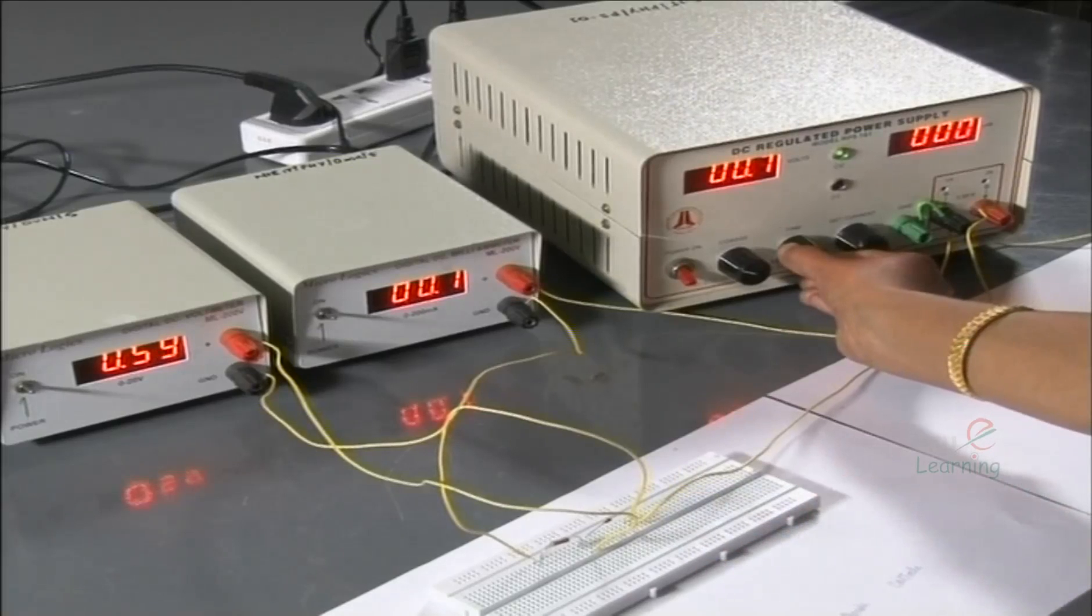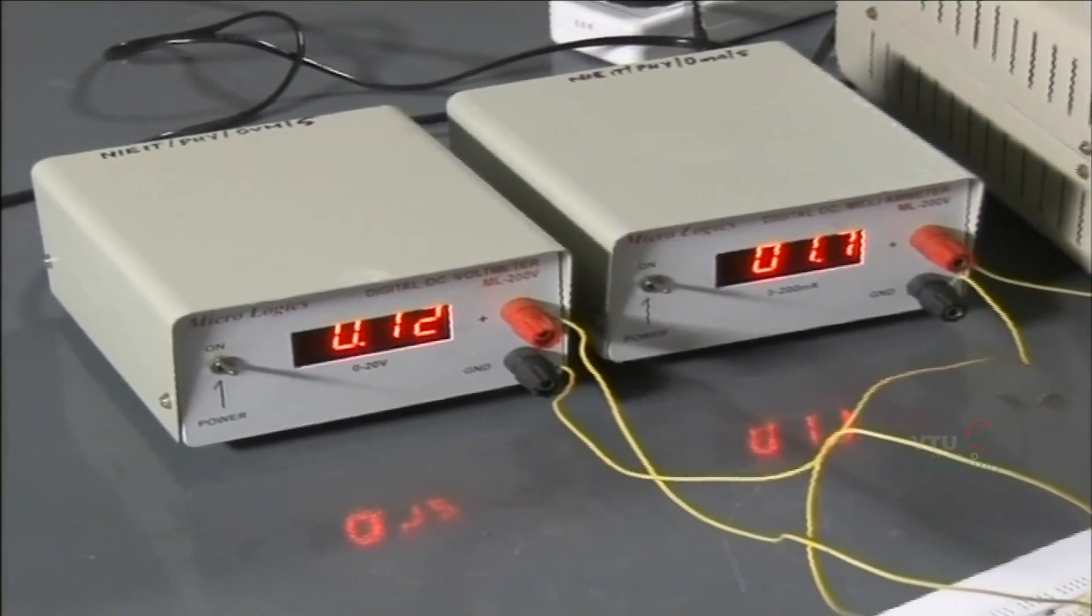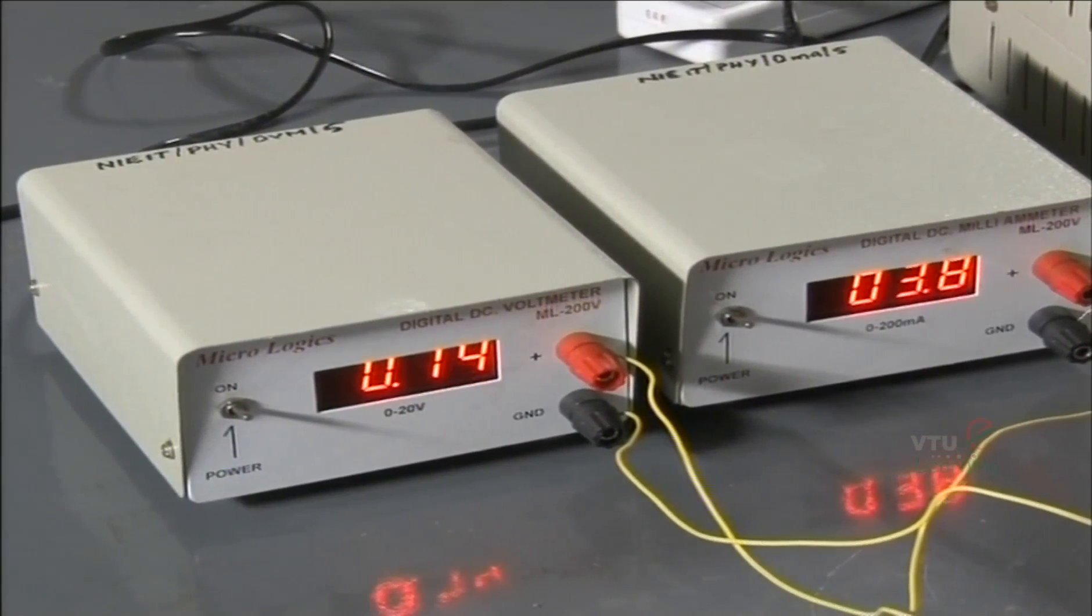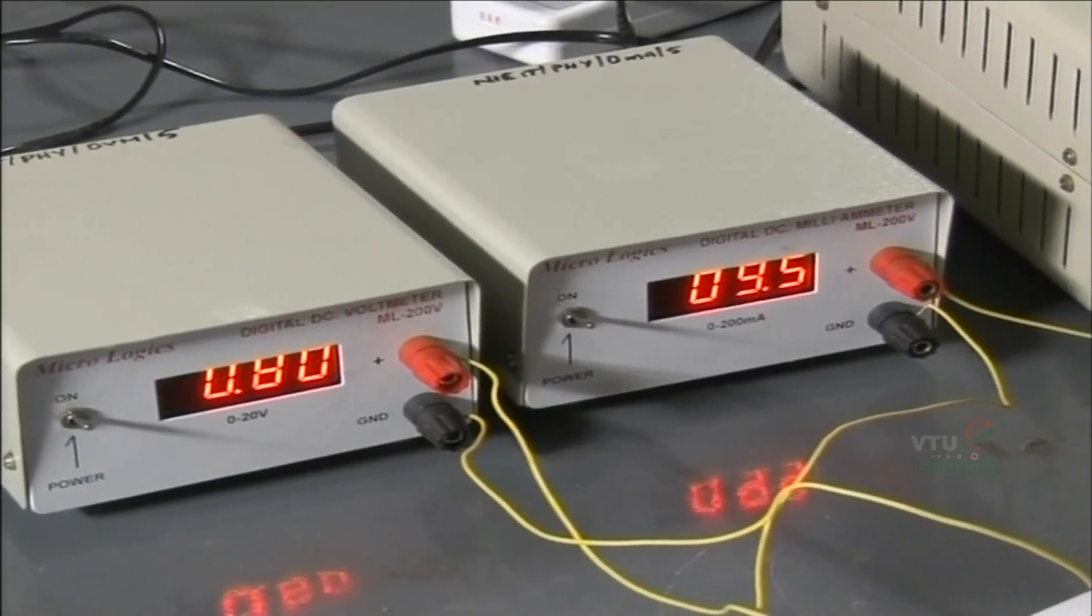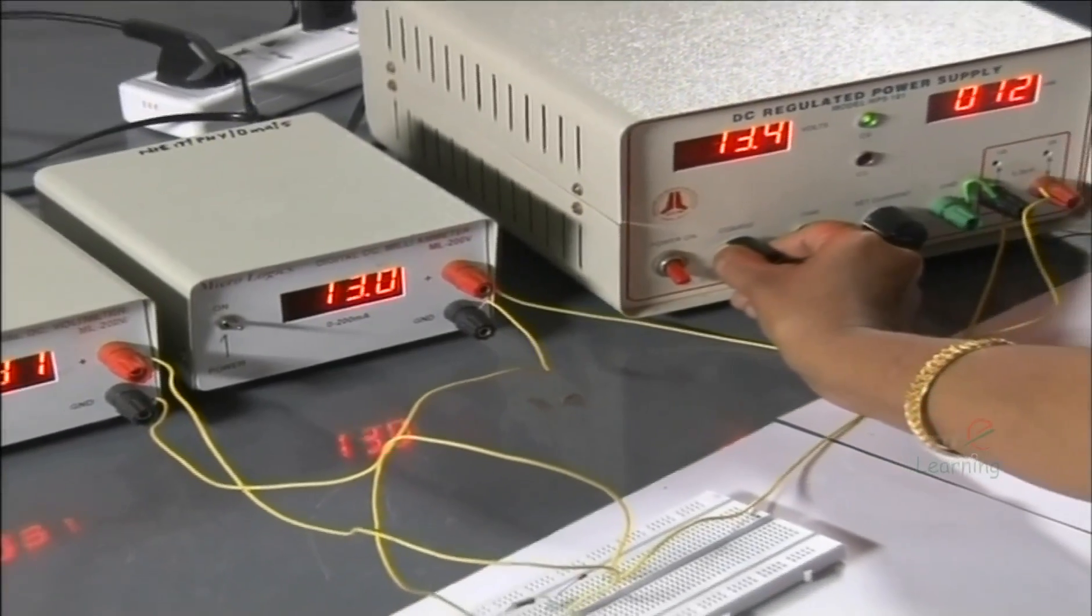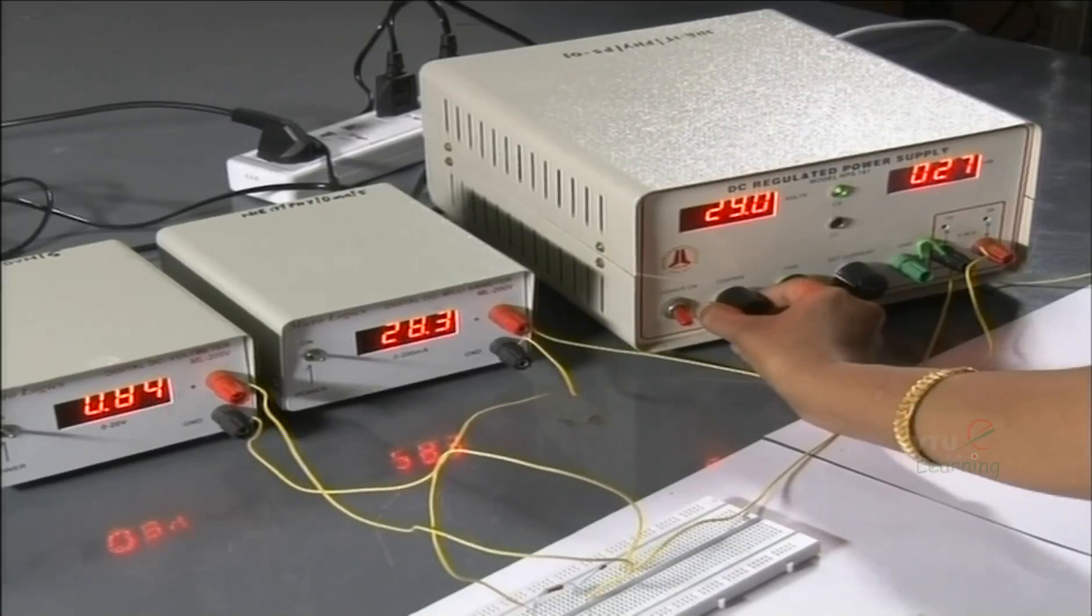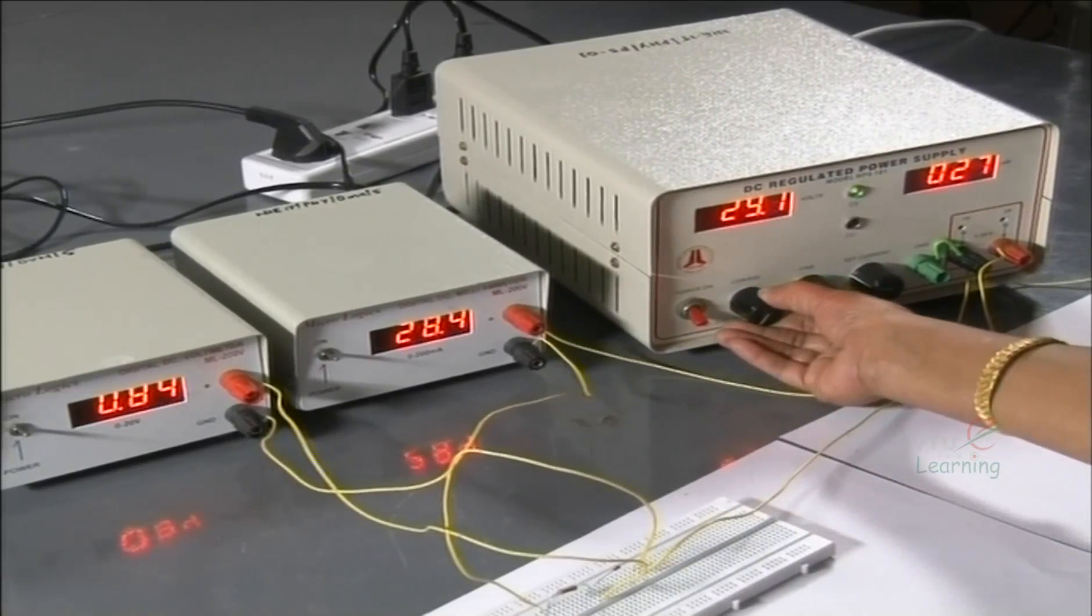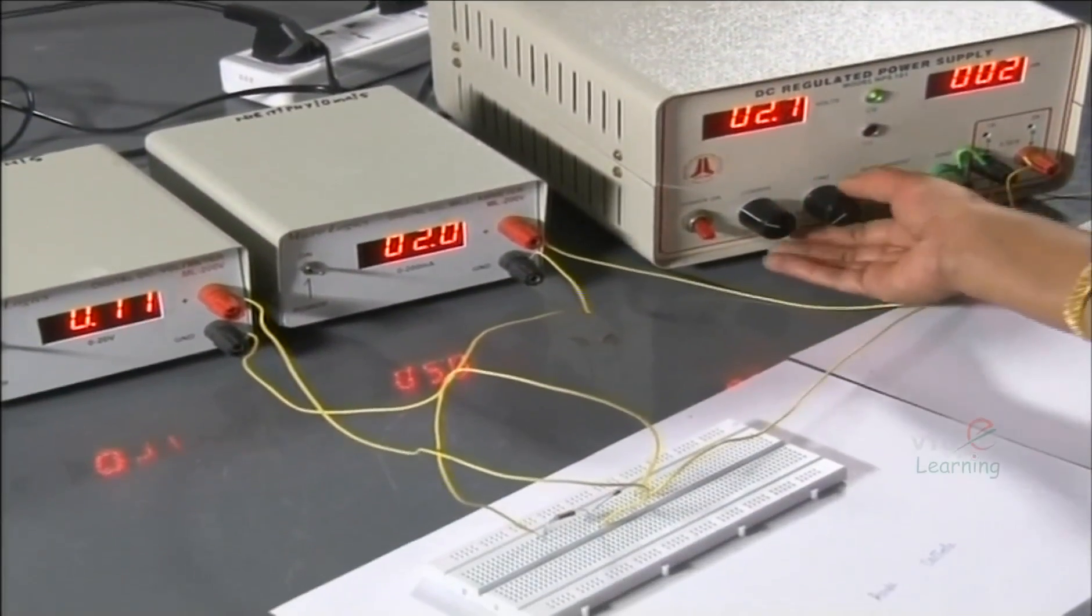That means it is the barrier voltage existing across the junction. Now increase the voltage in steps of 0.05 volts: 0.65, 0.7, 0.75, 0.8, 0.85 volts. The characteristic is exactly the same as that of ordinary diode as shown in the graph.